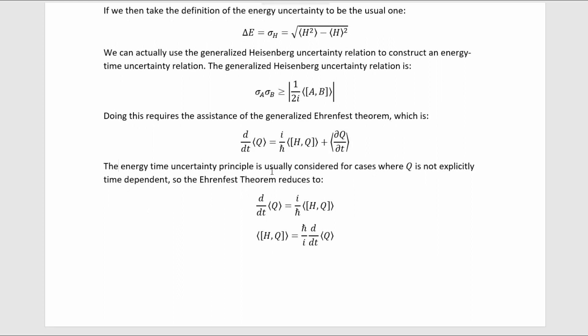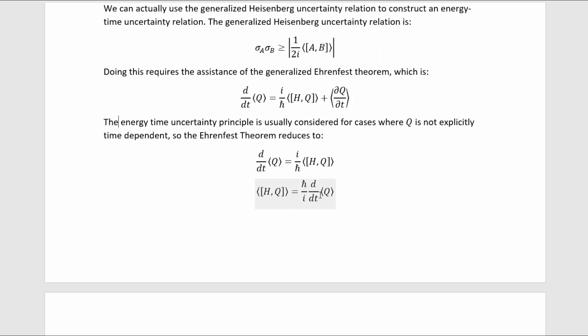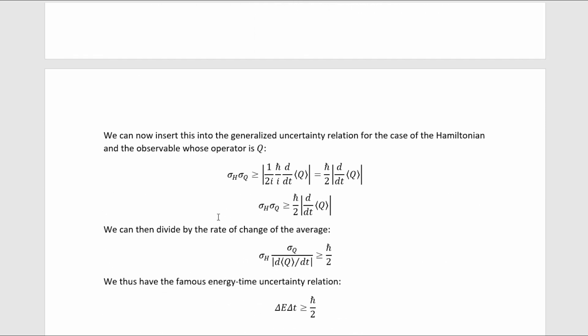The energy-time uncertainty principle is usually considered for cases where the operator Q is not explicitly dependent on time, so the Ehrenfest theorem reduces to this. And this allows us to make a useful substitution for this expectation value of a commutator, it allows us to replace it with this quantity here, which gets us down to this, ultimately,